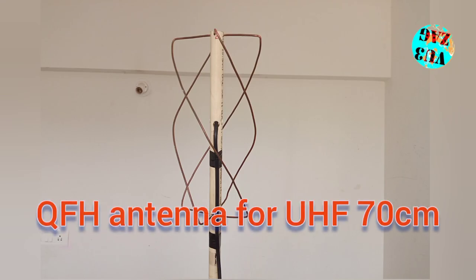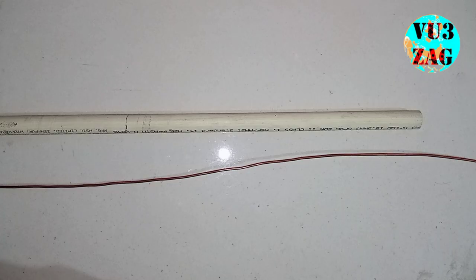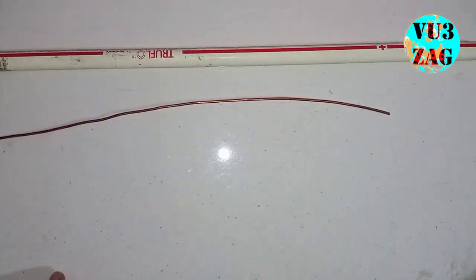Hello once again, welcome back to my channel, the Civic Uniform number 3 Zulu Alpha Gold. Suraj here. Today we will be discussing the construction of a QFH antenna for UHF frequency, that is for 70 centimeter. This is a circular polarized antenna mainly used for satellite communication.